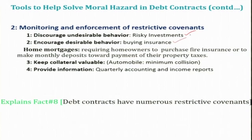For example, suppose someone has taken a mortgage loan. A restrictive covenant may require the homeowner to buy life insurance so the mortgage will be paid off upon the person's death. For businesses, restrictive covenants of this type focus on encouraging the borrowing firm to keep its net worth high, because higher borrower net worth reduces moral hazard and makes it less likely that lenders will suffer losses. Home mortgages also require homeowners to purchase fire insurance and make monthly deposits towards payment of property taxes.